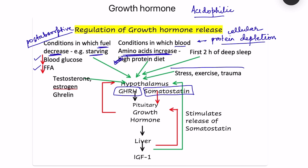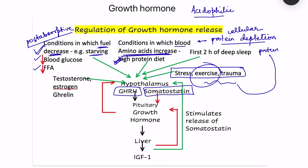Any kind of stress, exercise, or trauma also increases growth hormone release. Stress and trauma cause protein breakdown, while exercise creates an acute condition of fuel depletion. The key concept to remember is fuel depletion: decreased blood glucose, decreased free fatty acids, and cellular protein depletion with increased blood amino acids.